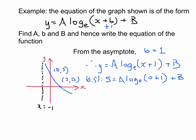Then this part here becomes log of 1, which means that this whole thing becomes 0. So therefore, you can say 5 equals B. So that means you can start to change this equation into one which has a number at the back here. So you have y equals a log to the base e of x plus 1 plus 5.